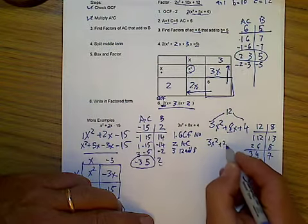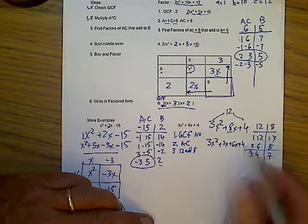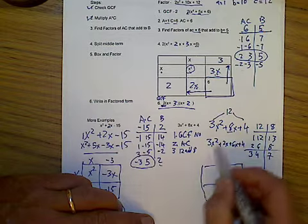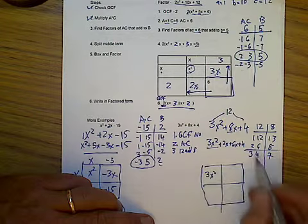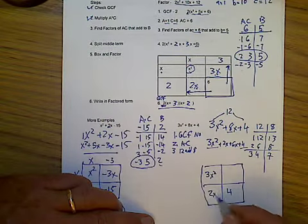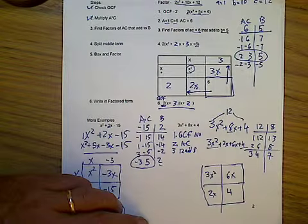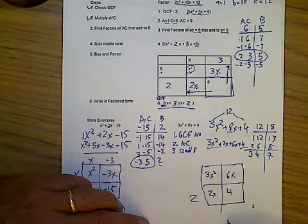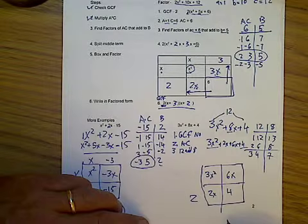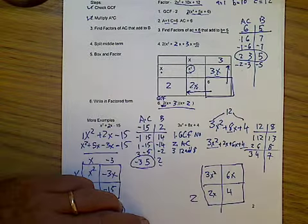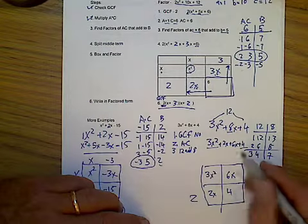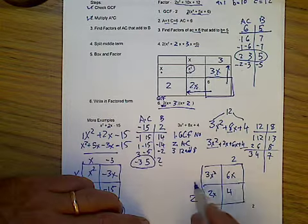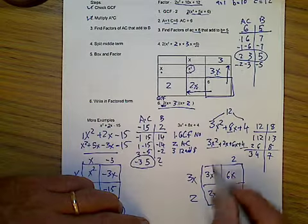I'm going to box and factor. Once again, my x² term goes in the top corner. My c term goes in this corner. And then I'm going to put the other two terms wherever I want. Then I look for commons. So 2. And what times 2 equals 4? That would be 2. That would be a common factor in that direction. Common in this direction is 3x. Common in this direction is x.